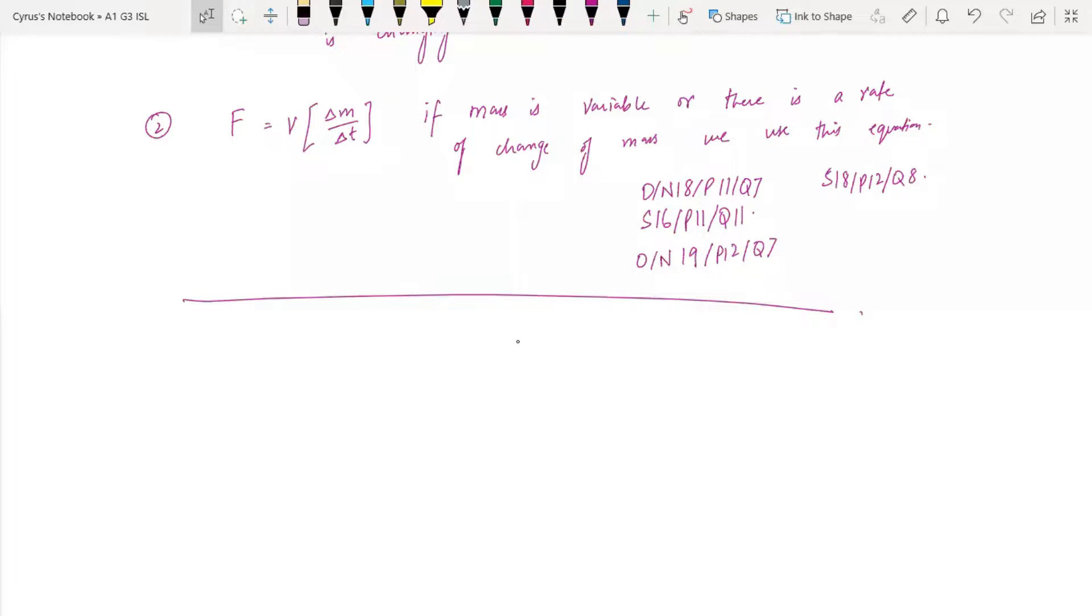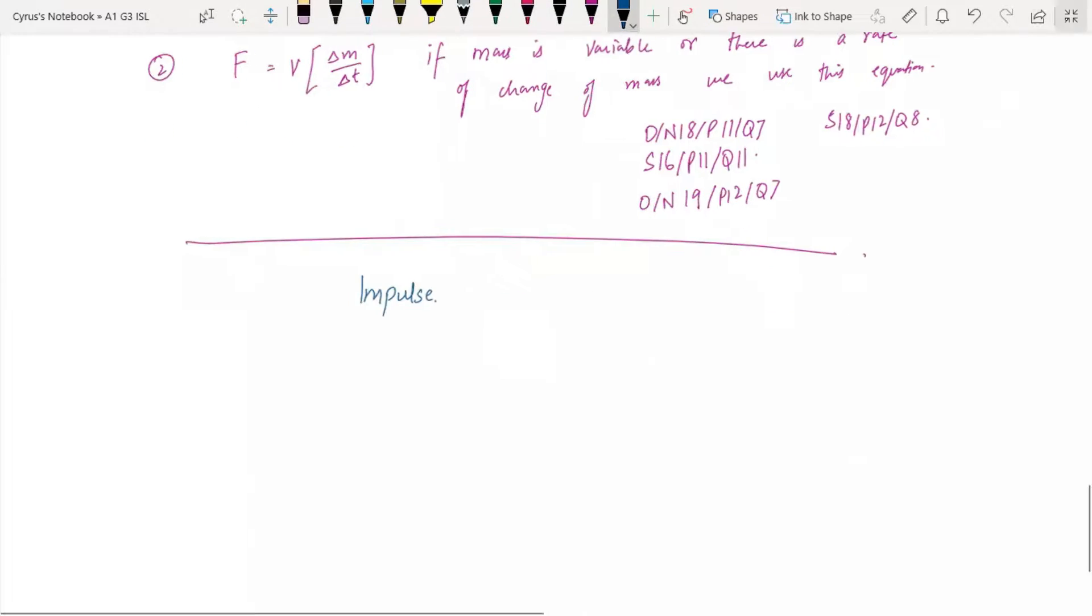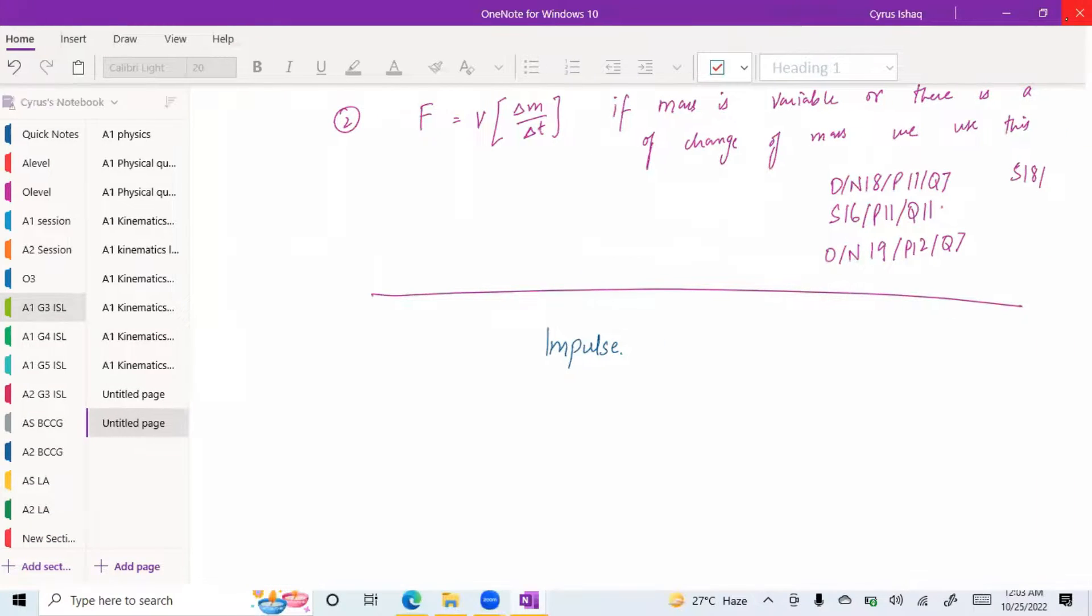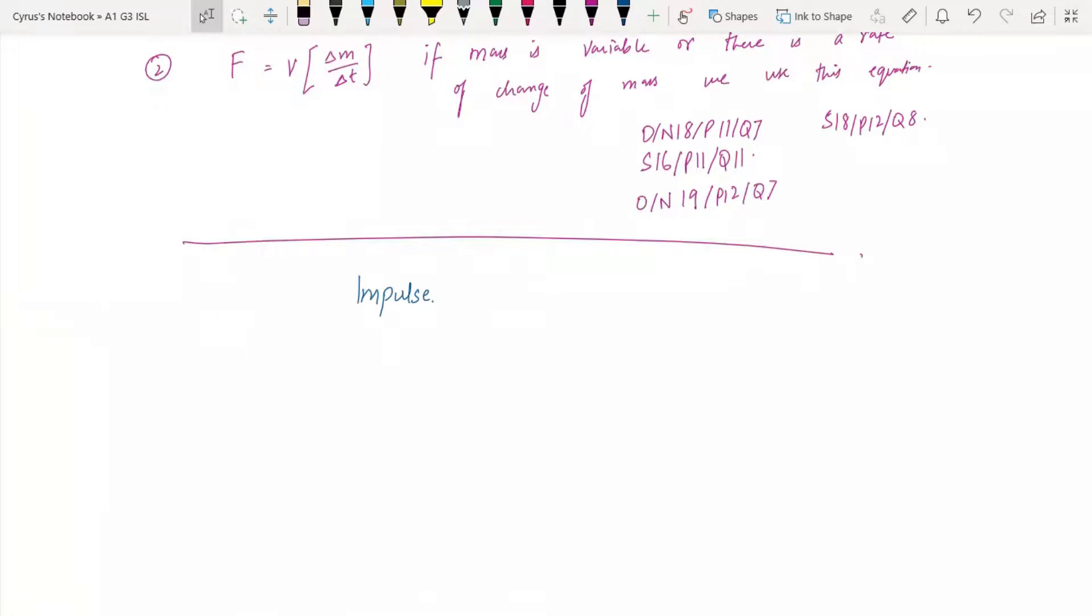We are going to talk about impulse. Impulse is related to cricket, impulse can be related to judo and karate. In that, you break the tiles and you apply a lot of force in a very short time. You usually have heard this word: it occurred in an impulse of a second. Impulse.